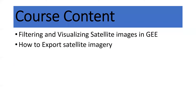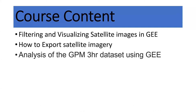We will also discuss how to export satellite imagery with different types of bands, and how to export different band types. We will also discuss analyzing the Global Precipitation Measurement three-hour dataset. I will show you how to easily make a time series chart. I randomly chose this dataset — the Global Precipitation Measurement three-hour interval dataset — but you can apply the same procedure to make any time series chart using Google Earth Engine.